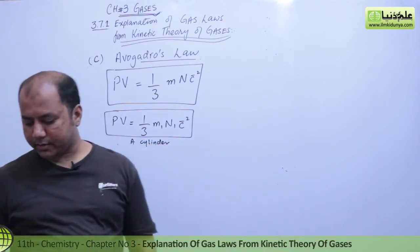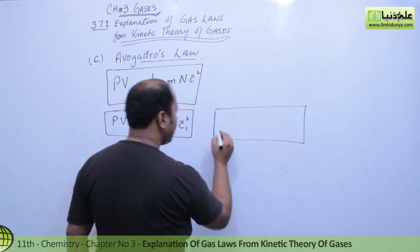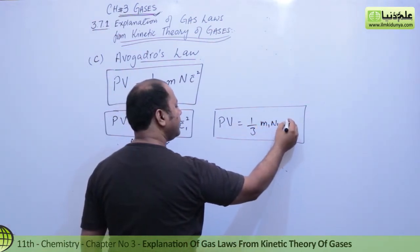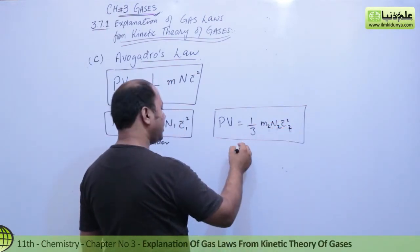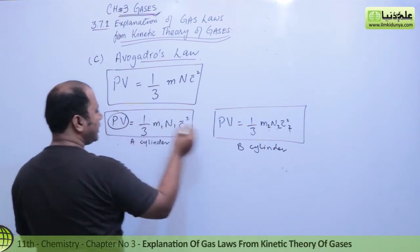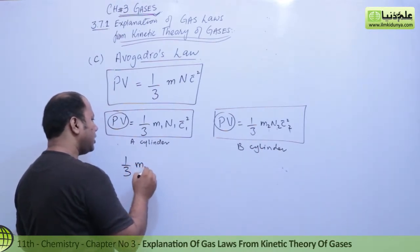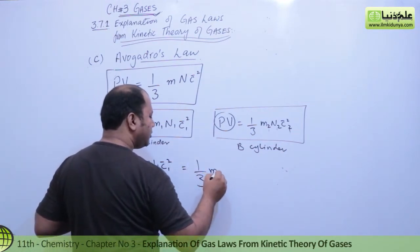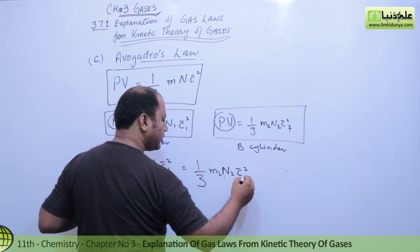Similarly, we write the same kinetic equation for the second cylinder: PV = (1/3) M₂ N₂ C̄₂². Here we use subscript 2 because we are talking about cylinder 2, cylinder B. Now compare these two equations — the PV factor is the same on both sides.